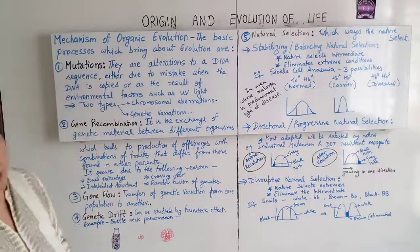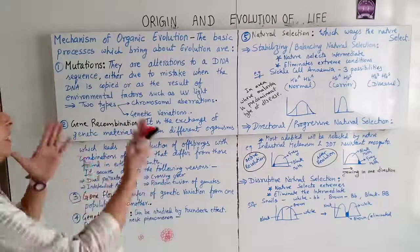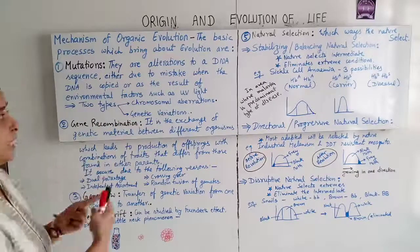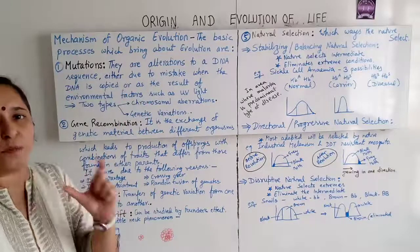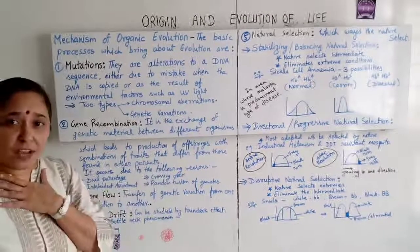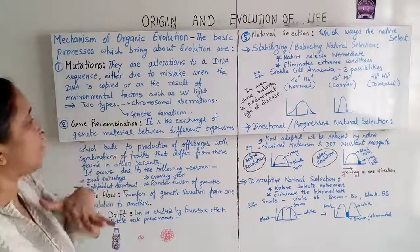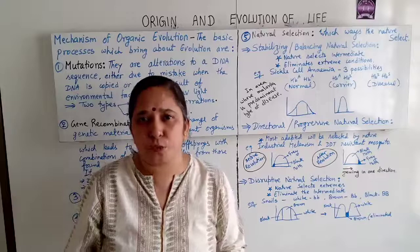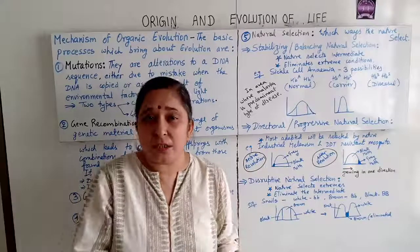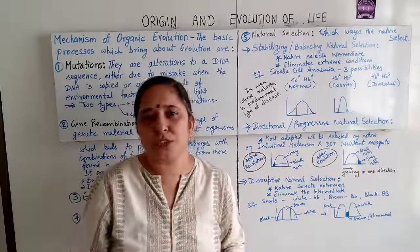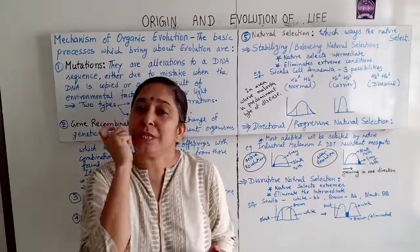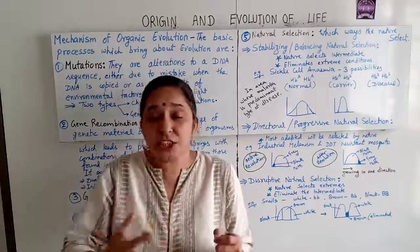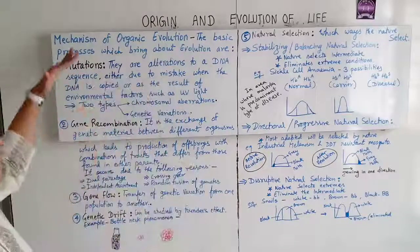Mutations are alterations in the DNA sequence, either due to mistakes during DNA replication or as a result of environmental factors such as ultraviolet light. There are two types of mutations: chromosomal aberrations and genetic variation. Chromosomal aberrations occur by deletion, inversion, translocation, and duplication of chromosome segments. Genetic variations result in a change in gene frequency.